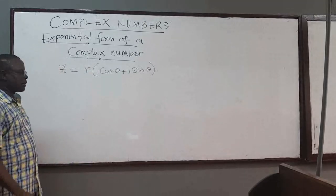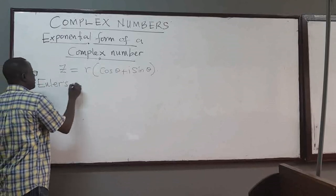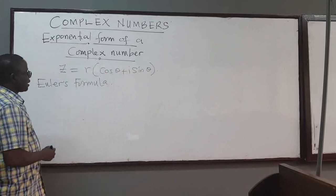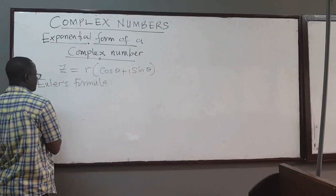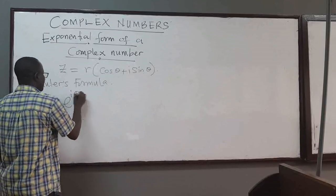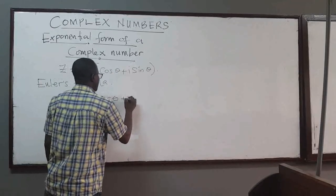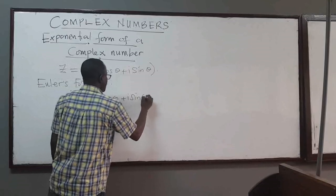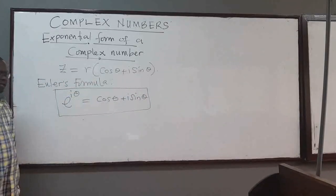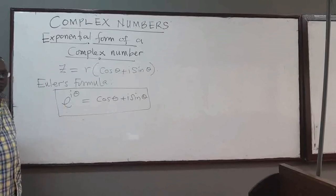Now, there is a formula called Euler's formula, which states that e to the power i theta is equal to cosine of theta plus i sine theta. That's Euler's formula — it's a powerful formula that we use to write complex numbers using this form.